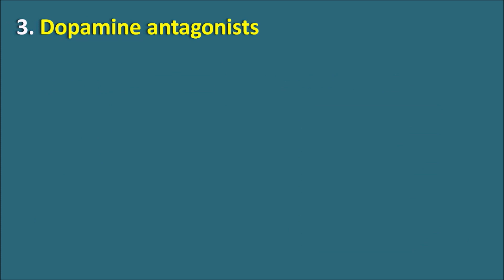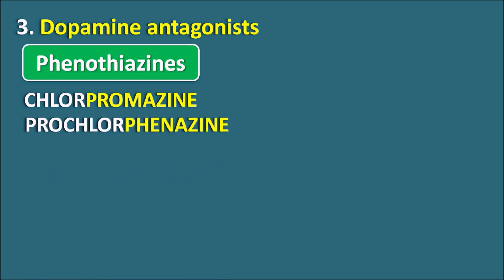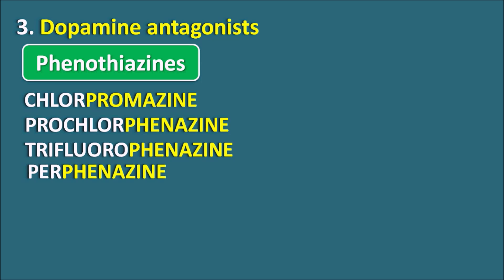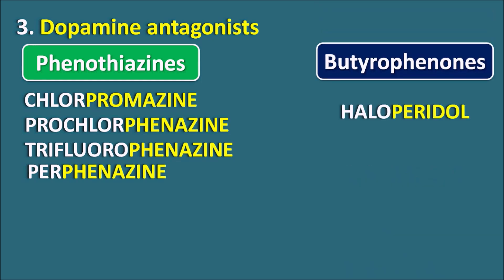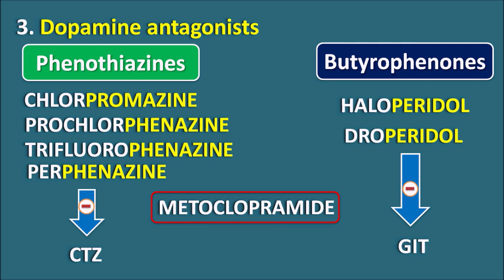The third class is the dopamine antagonists. Many drugs acting as dopamine antagonists are used as antipsychotics, but a few are also used as anti-emetics. Phenothiazines are one category — among them, chlorpromazine is well-known as an antipsychotic but can also be used as an anti-emetic. However, other phenothiazines are more preferred as anti-emetics: prochlorperazine, trifluoperazine, and perphenazine. Butyrophenones like haloperidol and droperidol can also be used. Phenothiazines mainly block D2 receptors on the CTZ, whereas butyrophenones block D2 receptors on the GI tract. Another drug, metoclopramide, blocks dopaminergic activation at both the CTZ and GI tract and can enter the CNS.